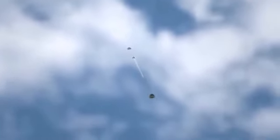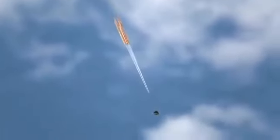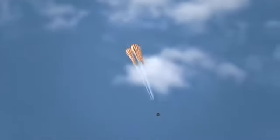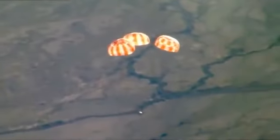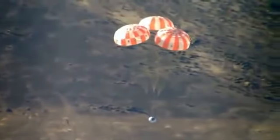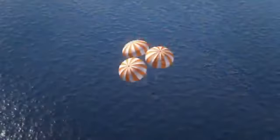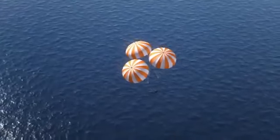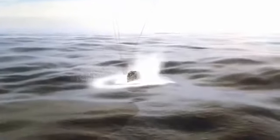Then the three main parachutes open. Once fully engaged, this canopy would cover an American football field. It takes parachutes this size and strength to slow the descent to 20 miles per hour. And then, splashdown.